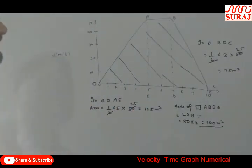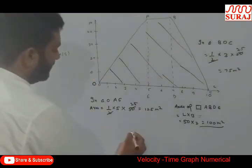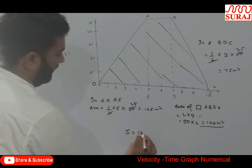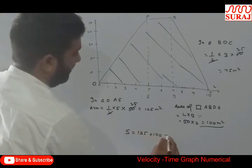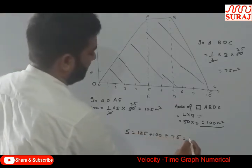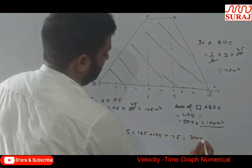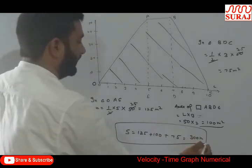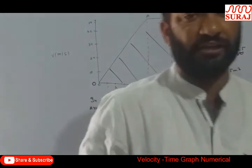If I can add all of this, then that becomes the distance. So, distance is equal to 125 plus 100 plus 75. So, this is equal to 300 meters. This is the distance traveled by the body. Thank you, my dear students.